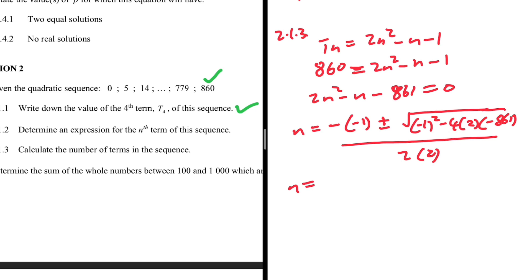Solving the quadratic formula gives n = 21 or n = -20.5. Obviously -20.5 cannot be correct because we cannot have a negative position. So n = 21. We have 21 terms in the sequence. That is 2.1.3.